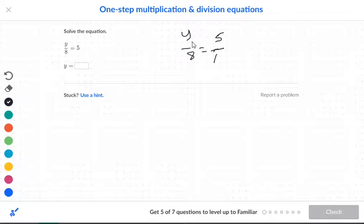So what I like to do is just cross multiply. I take 1 times y, so 1 times y is y, and then multiply the other way, take 8 times 5. So y is equal to 40.